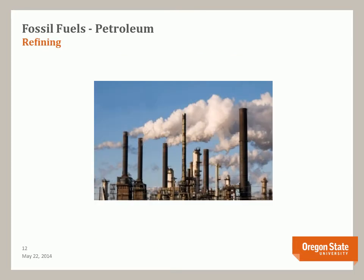After extraction, petroleum products are moved to a refining area. One issue with petroleum these days is there aren't that many refining facilities, and sometimes gas price spikes are not due to the amount of resource but actually our capacity to refine it. This is where petroleum is separated into its various useful constituents.